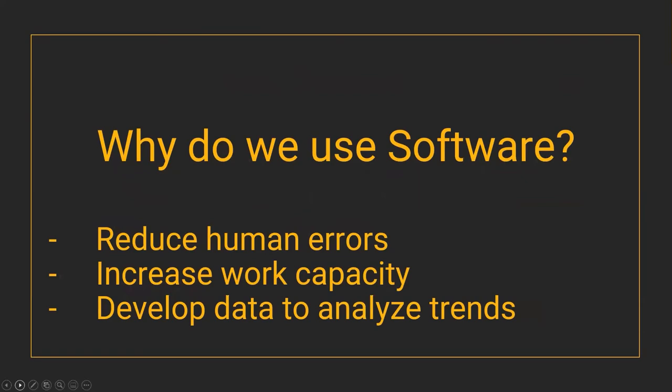Why do we use software? Three things from the book: first, it reduces human error — humans make mistakes, you can read the wrong word, write down the wrong letter or number. Second, it increases our work capacity — computing power is faster than the human brain at adding numbers or keeping track of multiple things. Third, it makes things easier for the human.